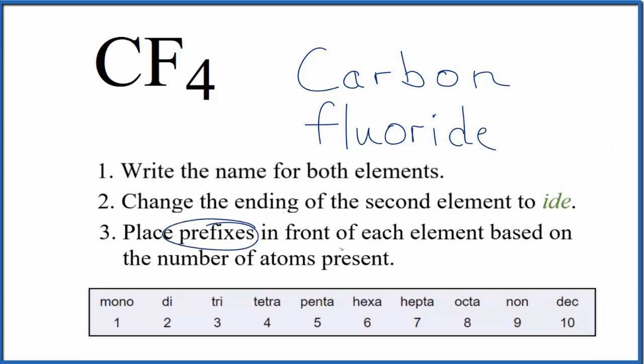Now we take into account these prefixes and put them in front of each element based on the number of atoms present. Carbon, we only have one carbon, so we don't need to do anything with carbon.